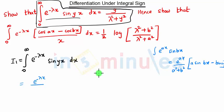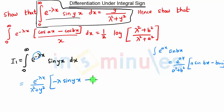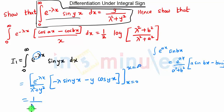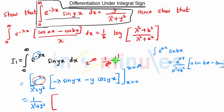Applying the formula, we get e^(-λx)/(λ² + y²) · (−λ sin yx − y cos yx), then we apply the limits. At the upper limit x → ∞, we have e^(−∞) = 0, so the entire upper limit term is 0.